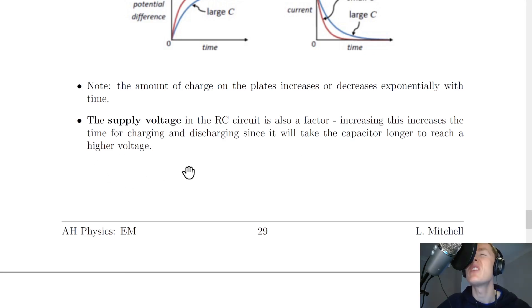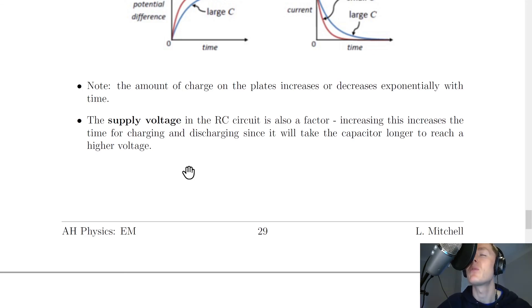To summarize, there are three factors that affect charging and discharging time for a capacitor: the resistance of the resistor, the capacitance of the capacitor, and the supply voltage in the circuit. Increasing all three of these will increase the charging and discharging time.